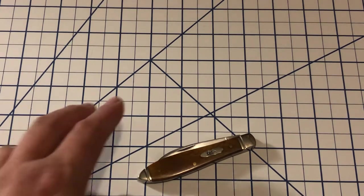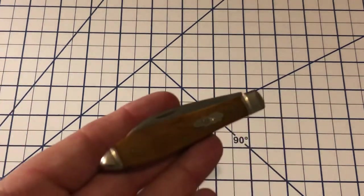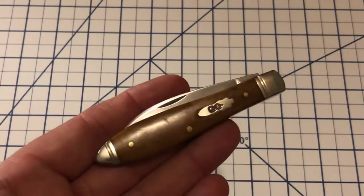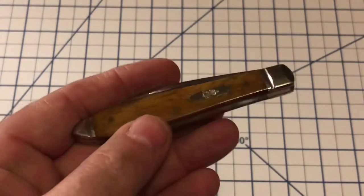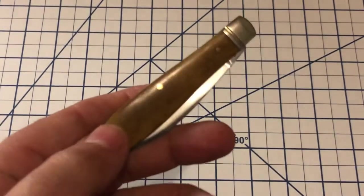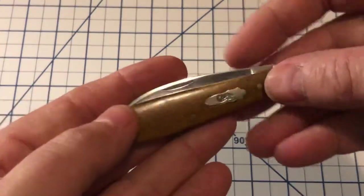So let's take a look at this 2016 teardrop folder. You can see it's got beautiful bone covers and it's in what Case calls antique bone. It's very smooth and very well done. The pins are perfectly flush on this.